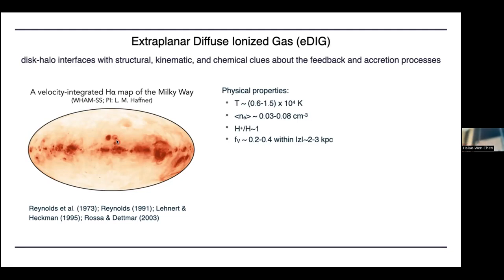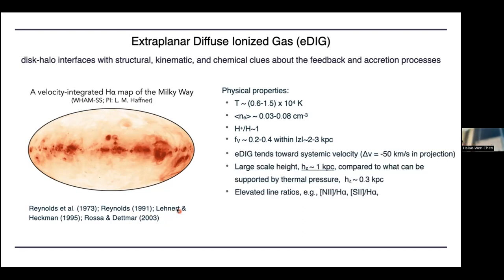This extended ionized layer — the so-called DIG or eDIG — has typical temperature around 10^4 K, density around 0.05 particles per cubic centimeter, and is fully ionized with volume filling factor not equal to unity. The scale height is about 1 kpc compared to 0.1–0.3 kpc for the neutral disk. There's also a velocity lag in this extended layer that tends to conform to the systemic velocity. The line ratios show elevated values, telling us there's an additional ionizing mechanism beyond simple photoionization.